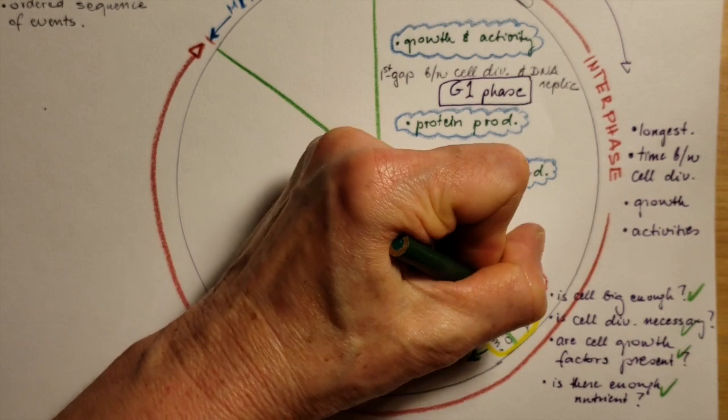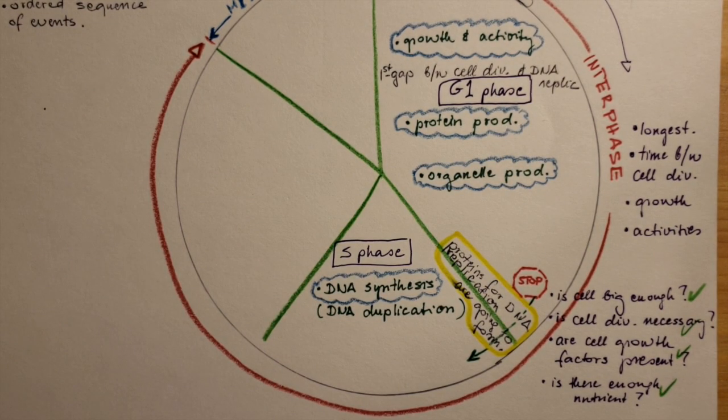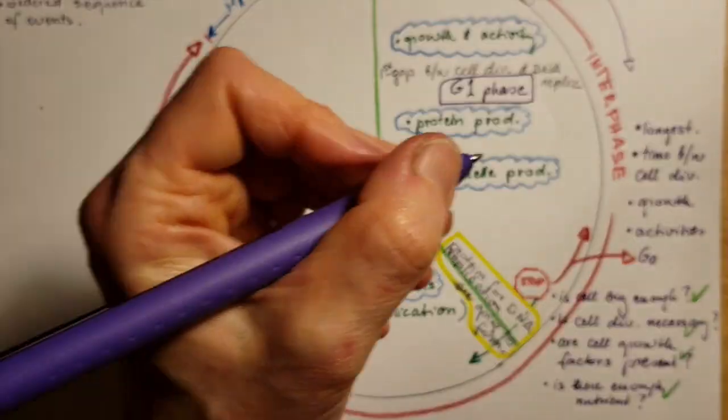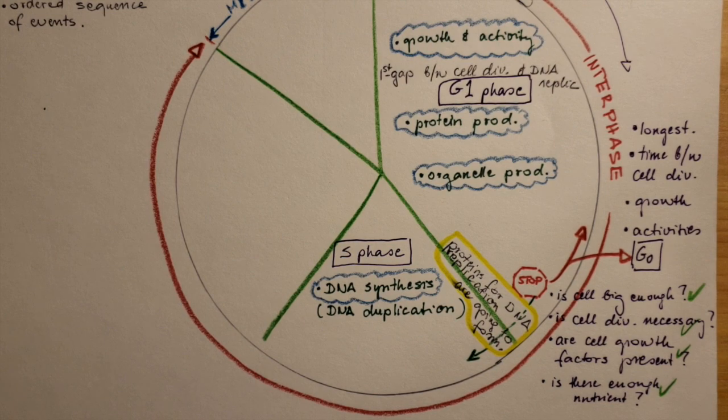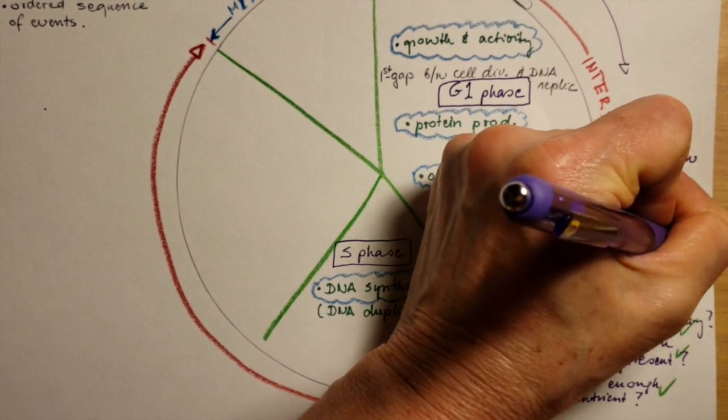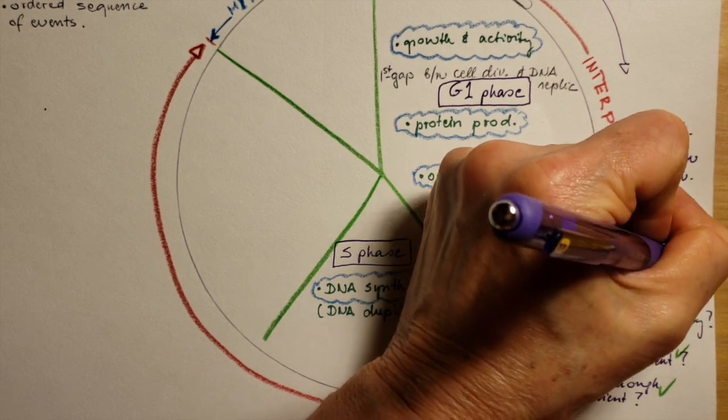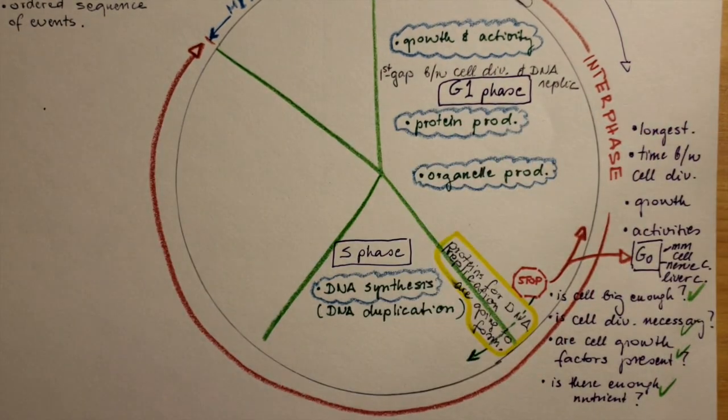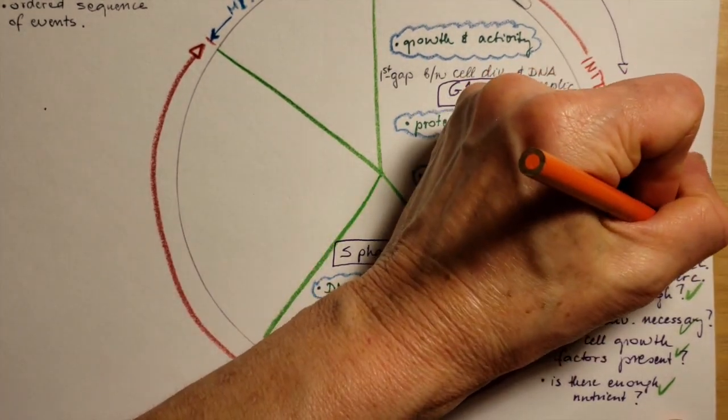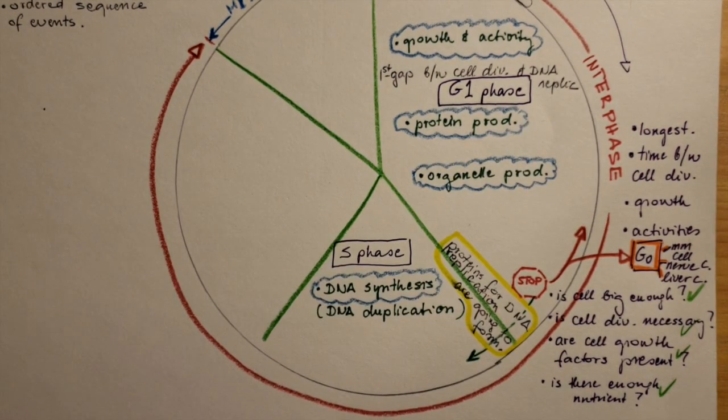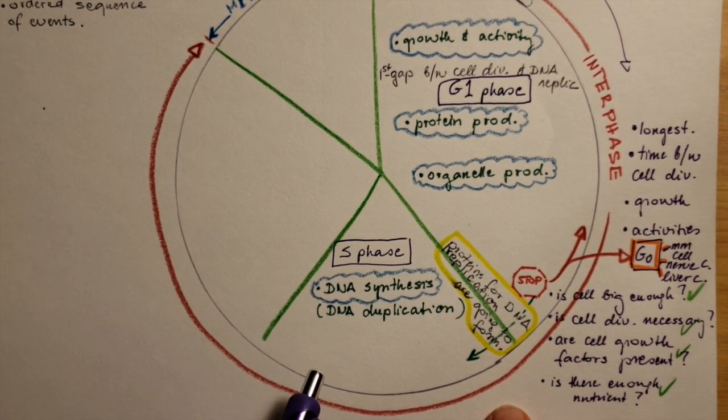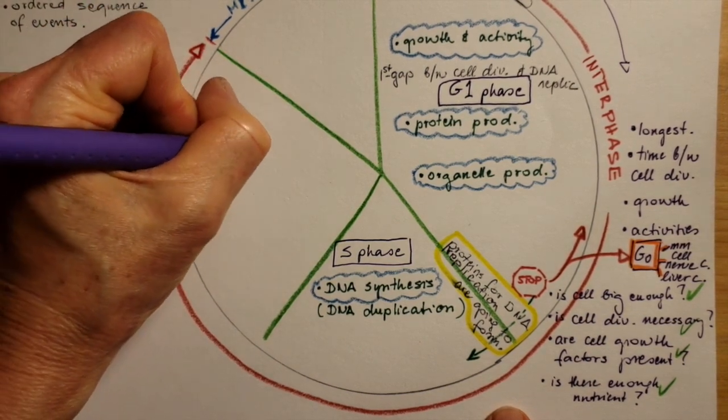On the other hand, if one of the questions are not answered as yes, the cell will stay in the G1 phase, the first gap, or it will go into a different stage, the G0 stage. That means it will do its job and will not divide. These cells are muscle cells, nerve cells and liver cells, for example. They usually don't divide for several years, for the nerve cells for our entire lives. They would not divide.